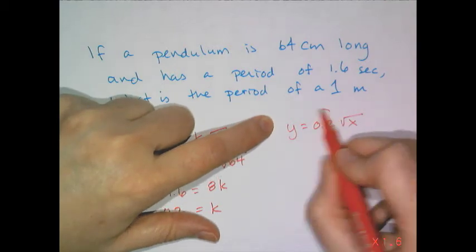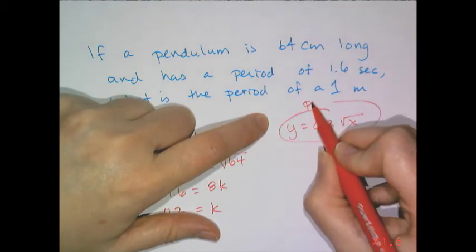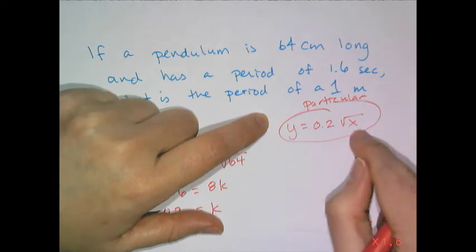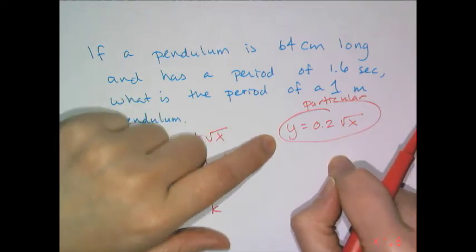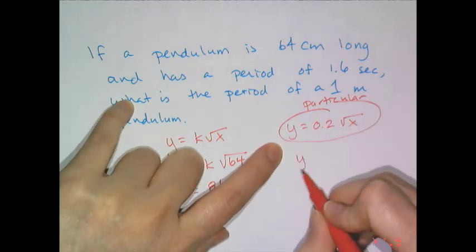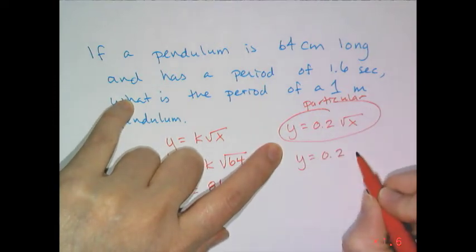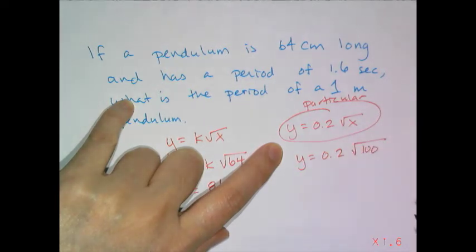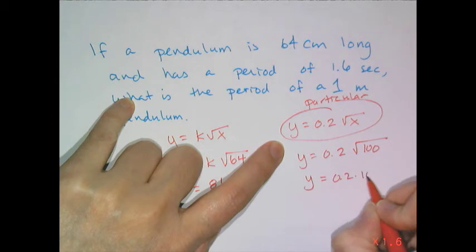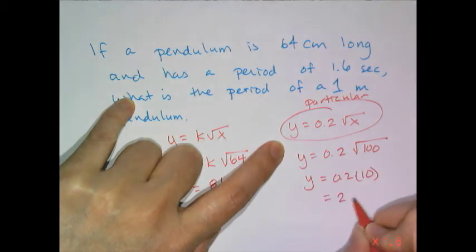This is called a specific or particular equation. If I ask for a particular or specific equation, I basically want you to find k. Now that I have this equation, I can actually answer the question, which is what is the period of a 1 meter or 100 centimeter long pendulum, which gives me y equals 0.2 times 10, which is 2 seconds.